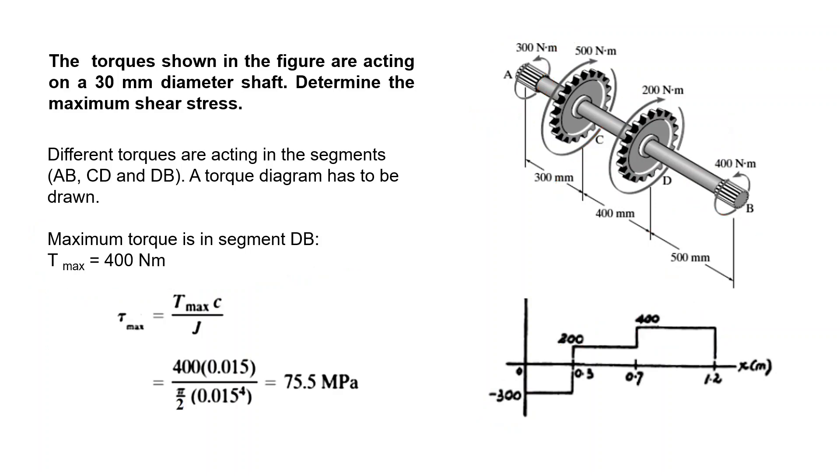All you have to do is take the torsion formula: maximum torque, radius, and the polar moment of inertia. This is in Newton meters, meters, meters to the four. The result is in newtons per meter square, which is pascals, and you have to convert it into megapascals.